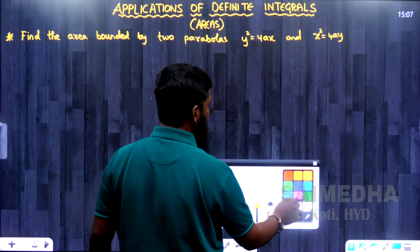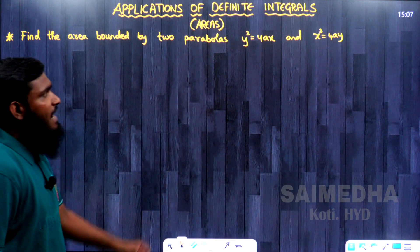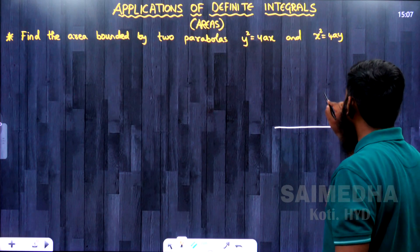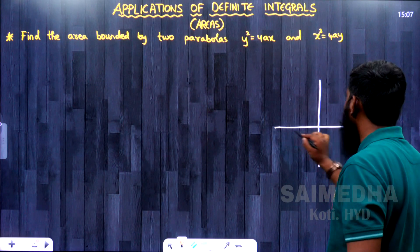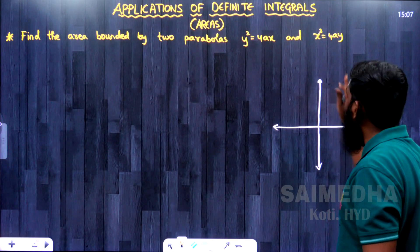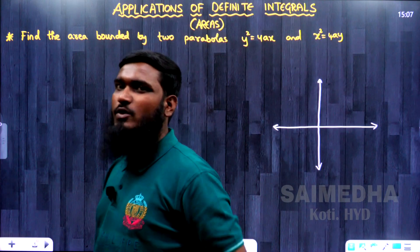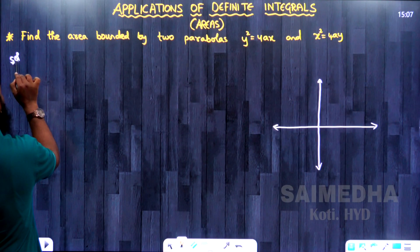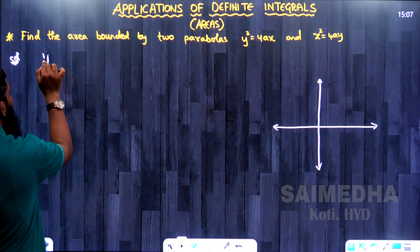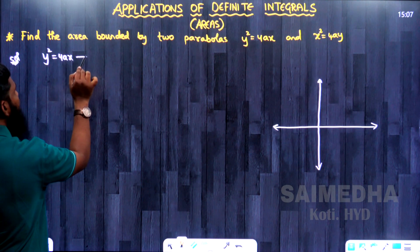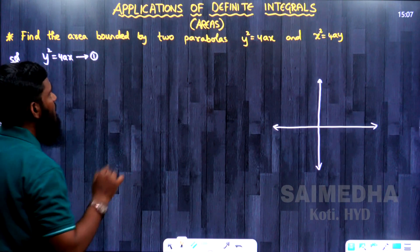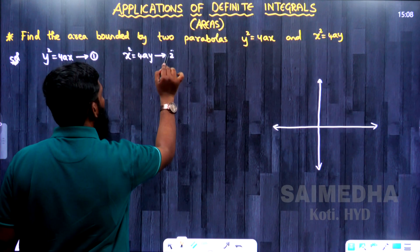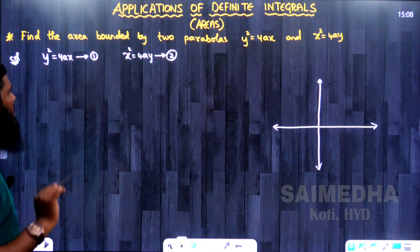We are having two parabolas. Let us draw them — this is the x-axis, this is the y-axis. No specific x or y values are mentioned in this question. The first parabola is y² = 4ax — I am taking this as equation 1. The second part is x² = 4ay — I am taking this as equation 2.